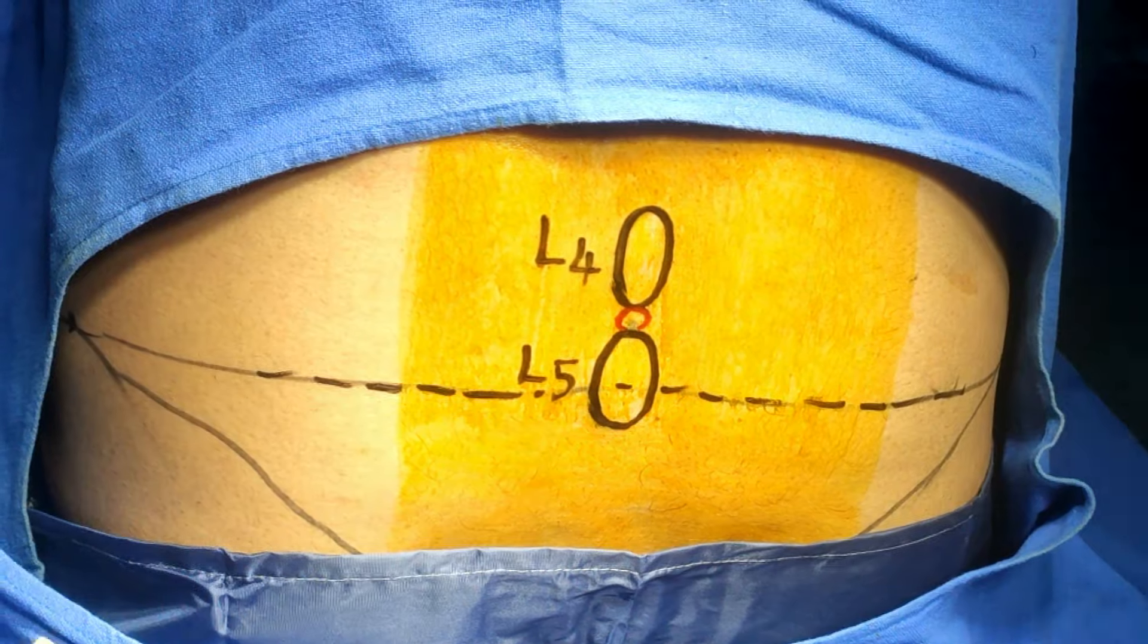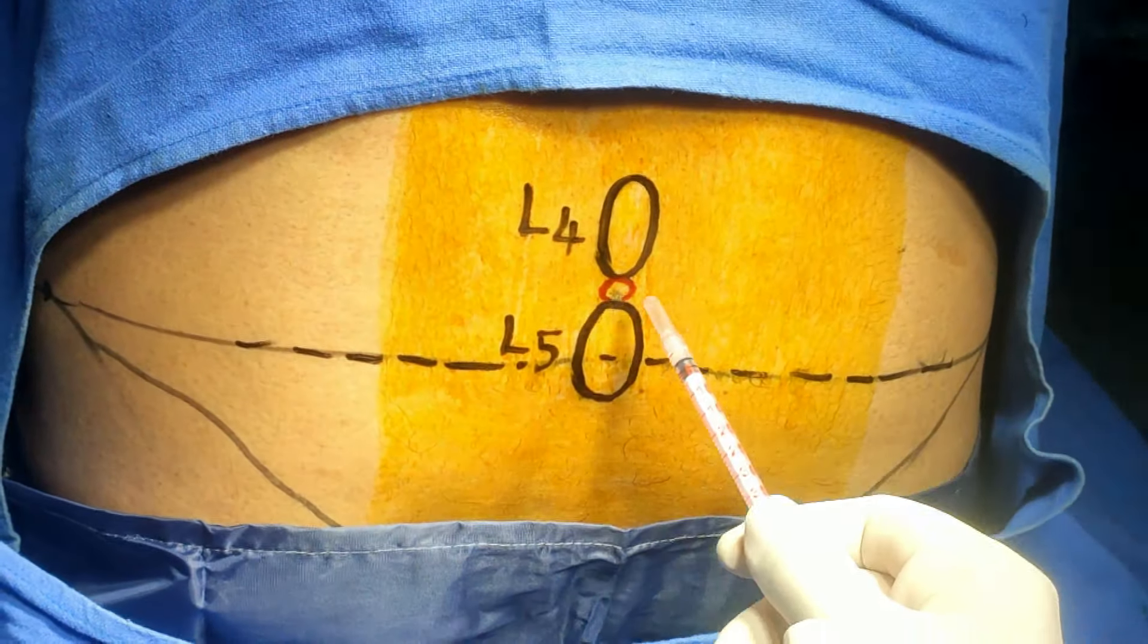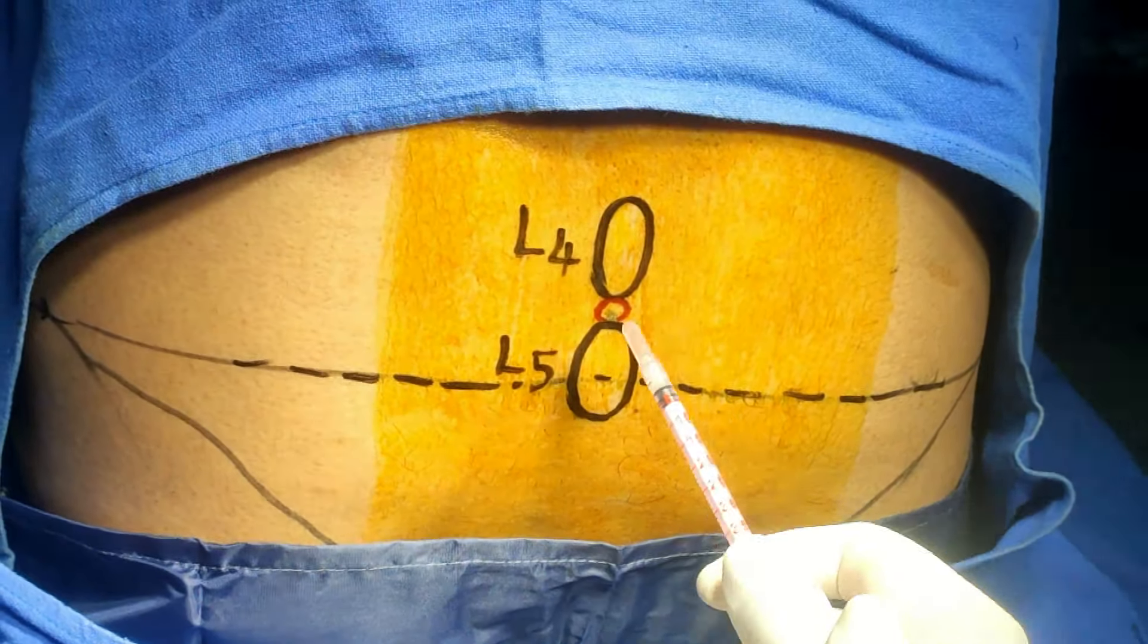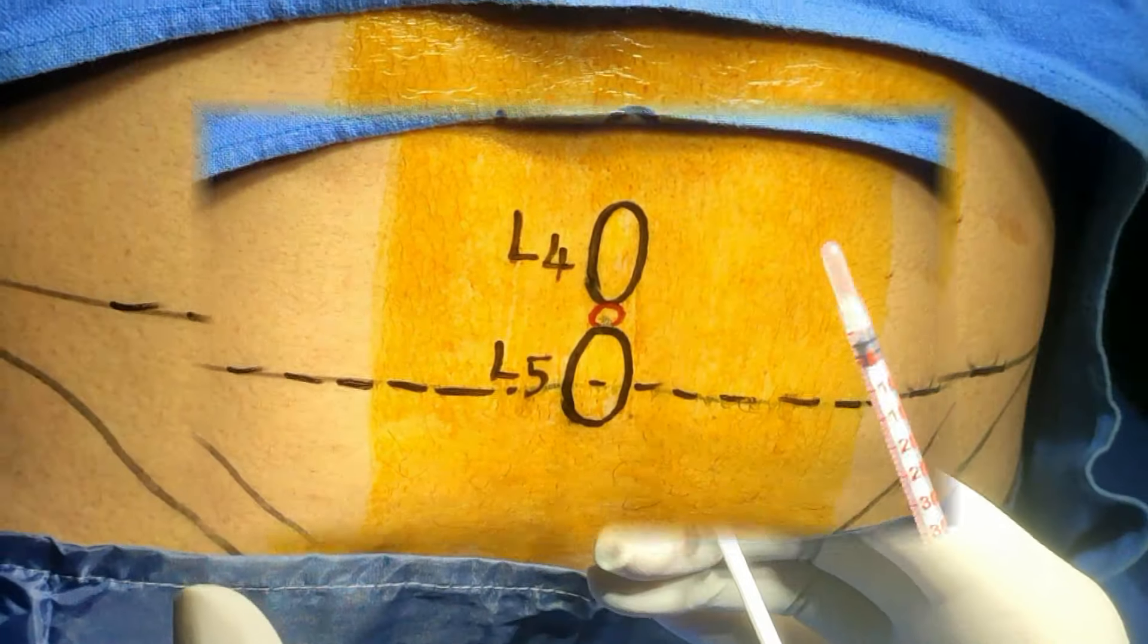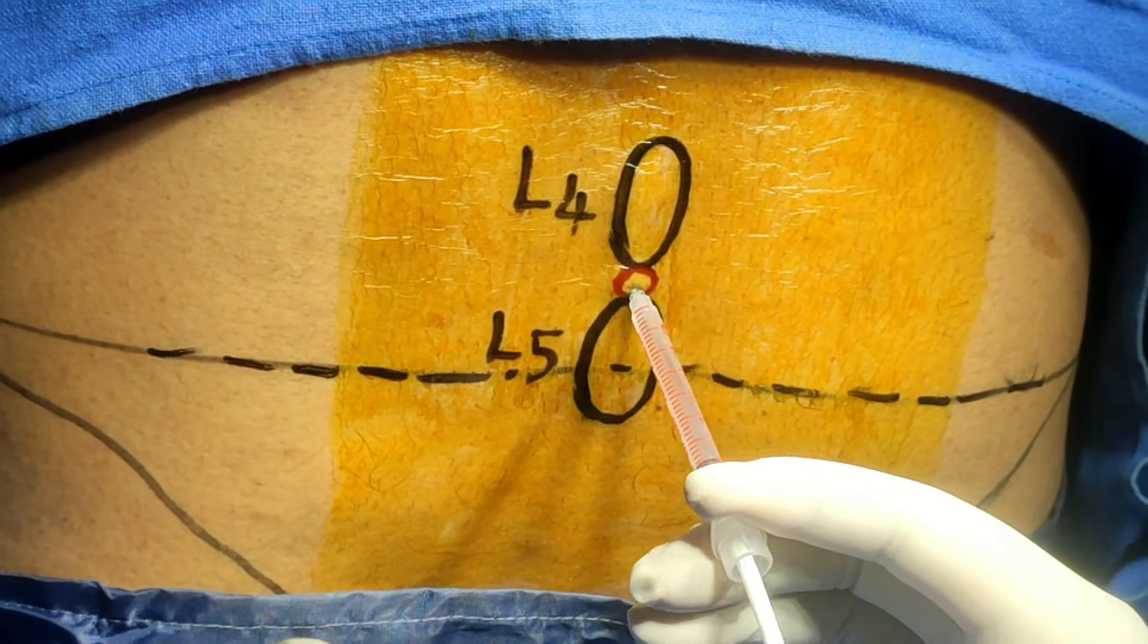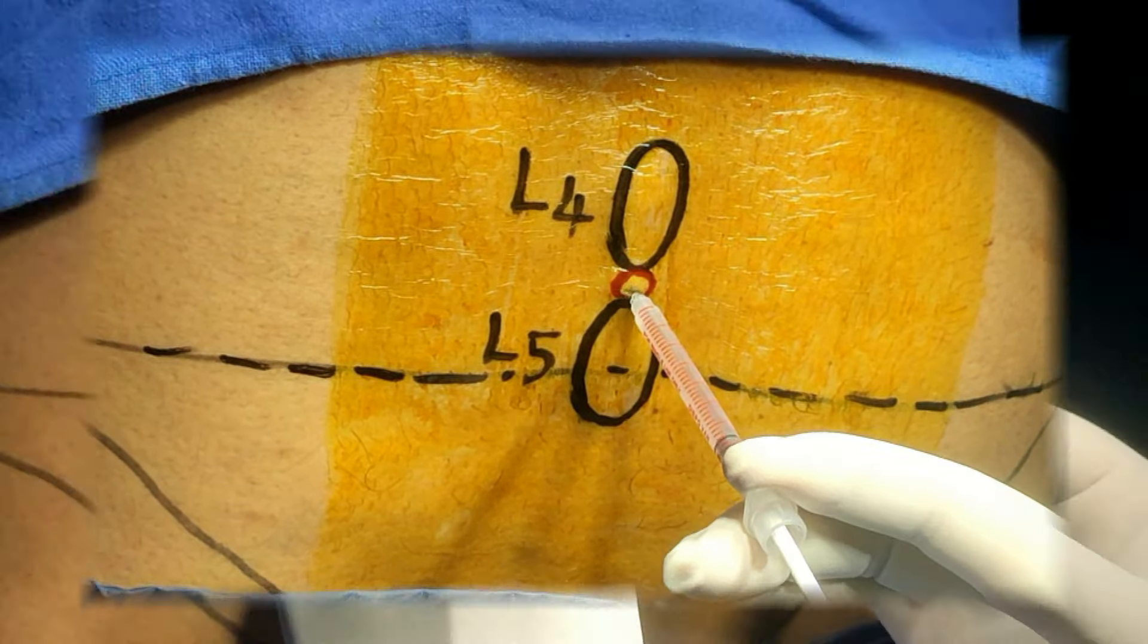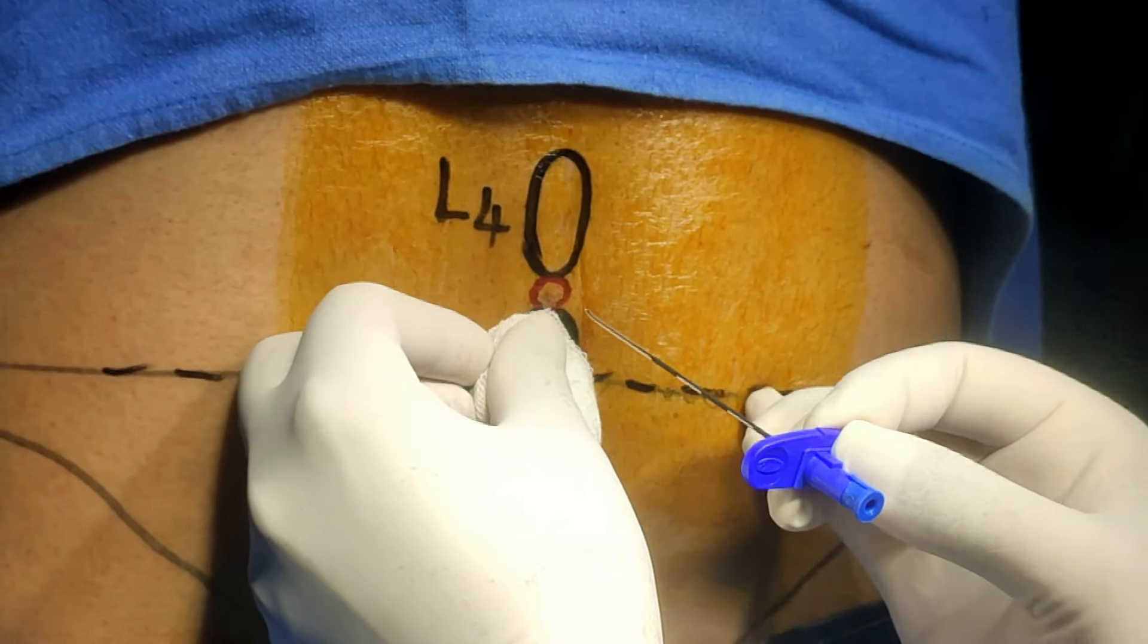This line is going towards the posterior superior iliac spine. I have marked the yellow circle here. This circle indicates the space. I am injecting about one ml or half ml of the local anesthetic solution.